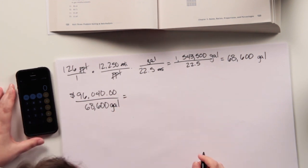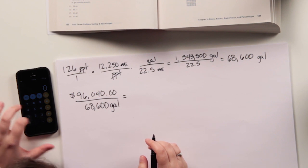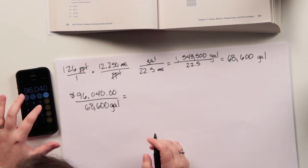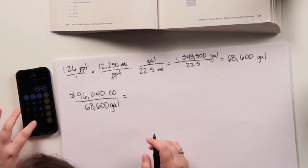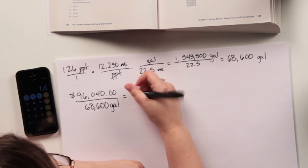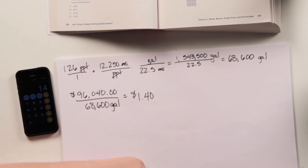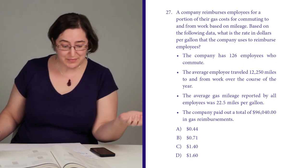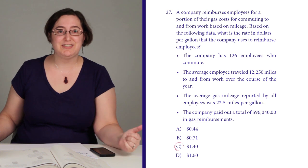Let me do that: $96,040 divided by 68,600 equals $1.40 per gallon — which I haven't looked at gas prices lately, but that seems kind of low. But it is in my answer choices: answer choice C. Thanks for watching! If you have any questions, leave them down in the comments. Don't forget to subscribe to the channel for more videos just like this one, and I will see you on the next three SAT practice questions. Bye!